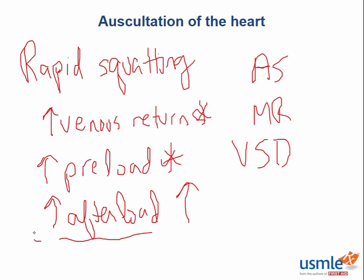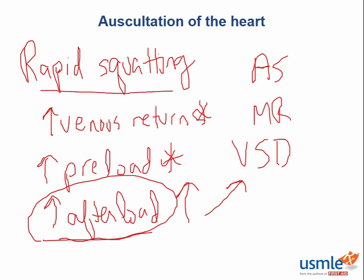The increase in ventricular septal defect murmur intensity is directly related to the increase in afterload. With greater pressure that the heart is pushing against, more blood is shunted across the ventricular septal defect into the right ventricle — an area of lower pressure — rather than going out into the aorta, which is at relatively higher pressure and even greater pressure due to the rapid squatting.